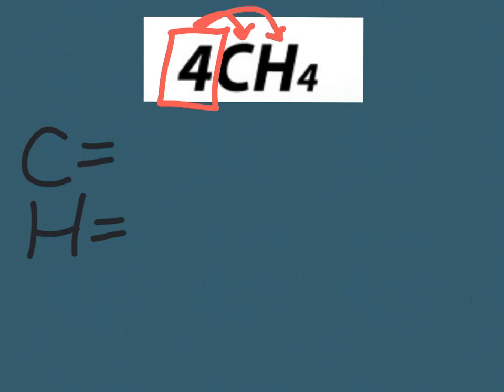Taking carbon first: carbon does not have a subscript or small number following it, so we are going to assign it an invisible one. In order to count the number of carbon atoms, we need to multiply the subscript by the coefficient. In this case, 4 times 1 gives us a total of 4 carbon atoms. Next, hydrogen has a subscript of 4, so we need to multiply that by our coefficient. So 4 times 4 gives us a total of 16 hydrogen atoms.